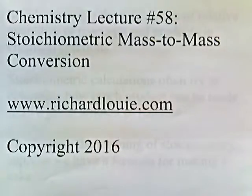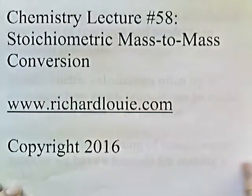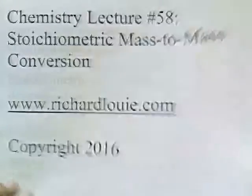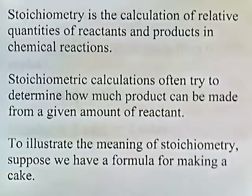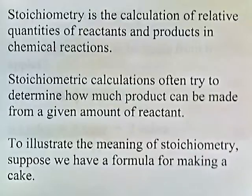Chemistry lecture number 58: Stoichiometric Mass-to-Mass Conversion. Stoichiometry is the calculation of relative quantities of reactants and products in chemical reactions. Stoichiometric calculations often try to determine how much product can be made from a given amount of reactant.